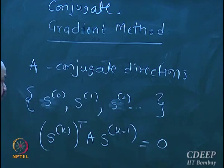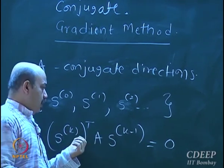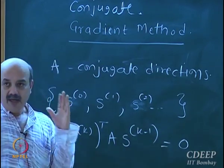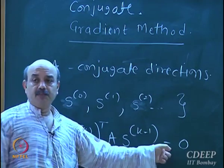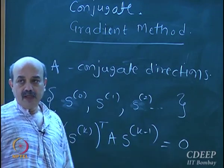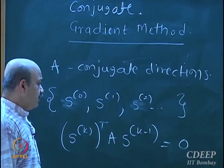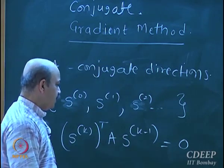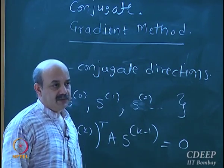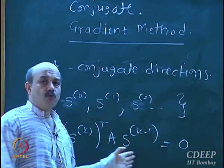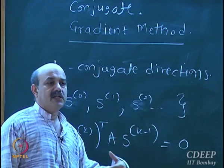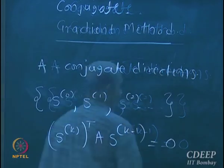If you take a new direction and a previous direction, and their dot product weighted by the A matrix is zero, then these directions are called A-conjugate directions. What you can show is that instead of moving along the gradient direction, if you move along A-conjugate directions, you reach the optimum very fast.